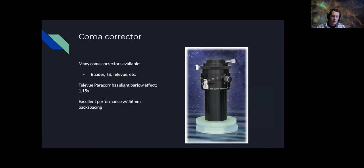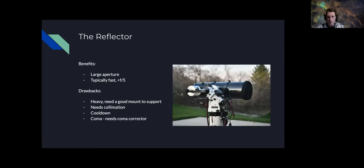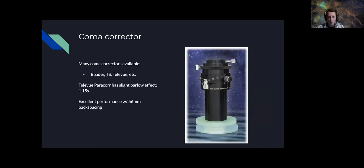There are many coma correctors available — Baader Telescope Service, Televue, and others. I'm using the ParaCore with my Newtonian, which gives a slight Barlow effect and turns my F4 into an F4.6 telescope. That trade-off is worth it for the performance. The backspacing is around 56 millimeters, so it works with almost all astronomy cameras.